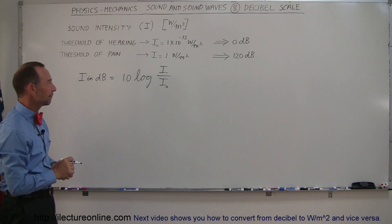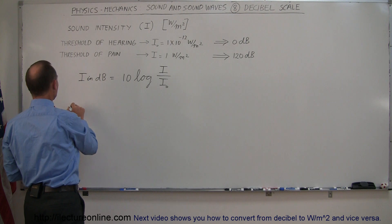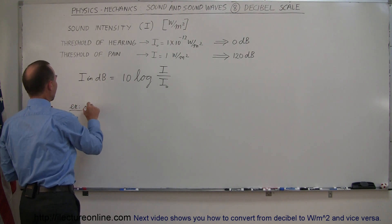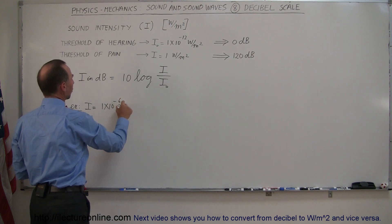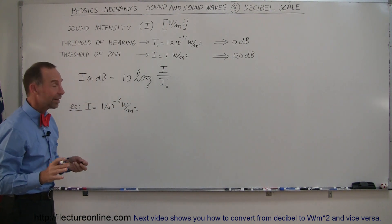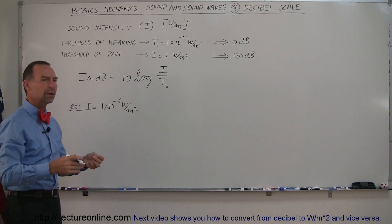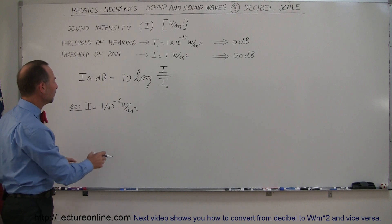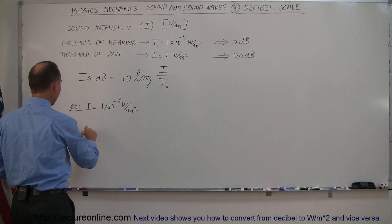So let's take an example. Let's say that we have an intensity that's equal to 1 times 10 to the minus 6 watts per square meter, and we want to go ahead and find what that is equivalent to in decibels. By the way, that's pretty much like a conversation, a room between people probably sounds about that intensity.